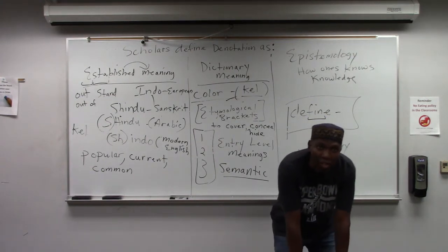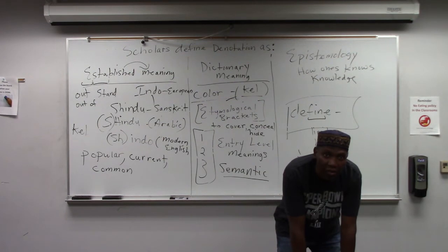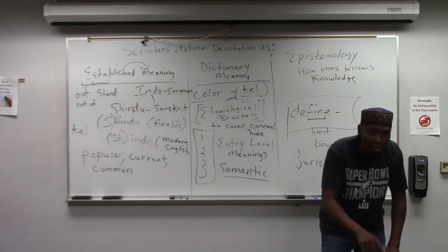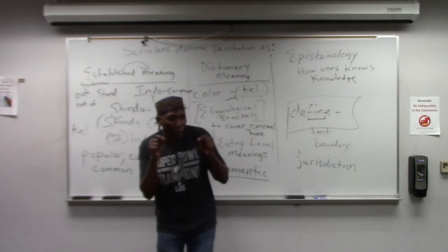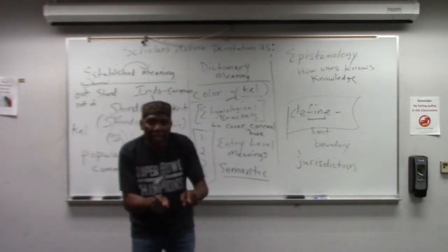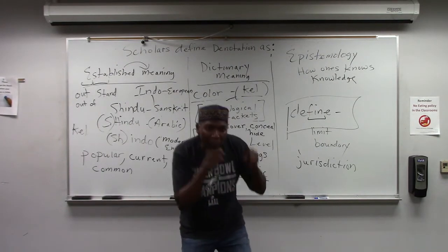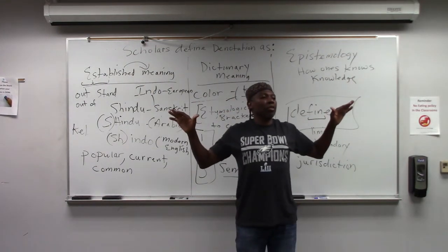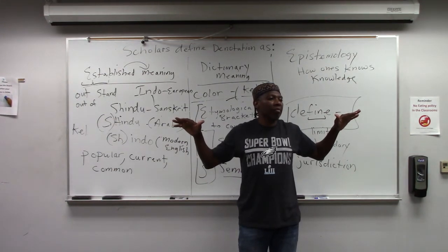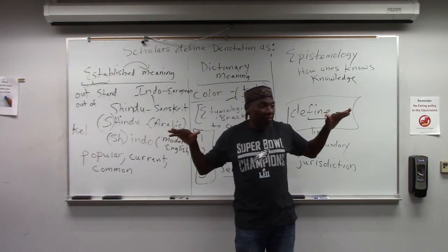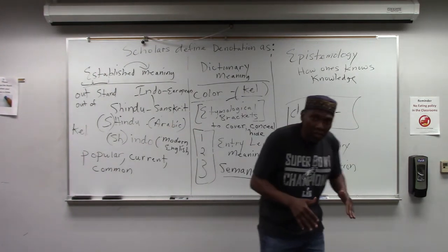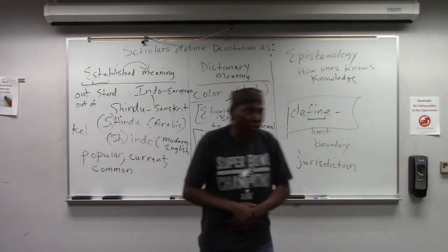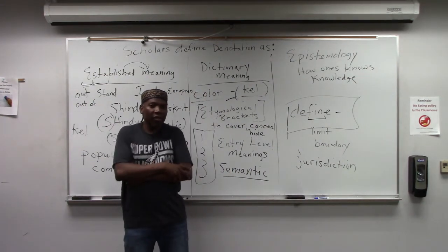The legal meaning of color is: artificial, a simulacrum distinguished from that which is real. That's the legal meaning. So the etymology and the legal meaning of the word 'color' have nothing to do with complexion. The legal meaning and the etymology both read otherwise — that's not my opinion, that's etymology and law.